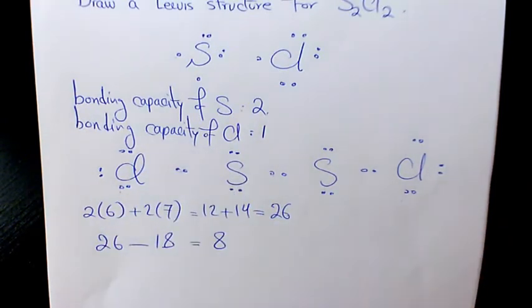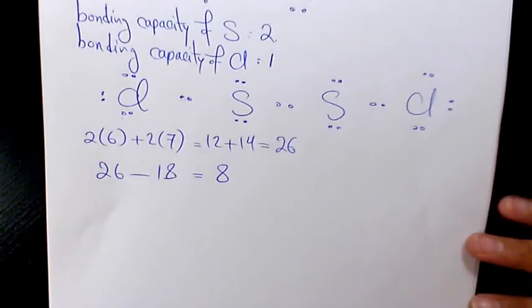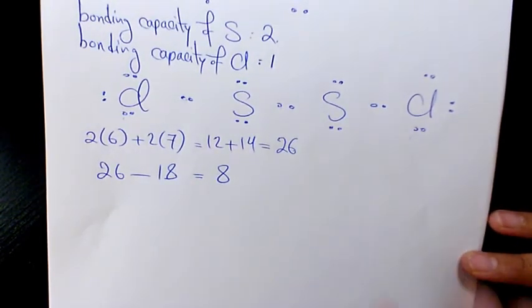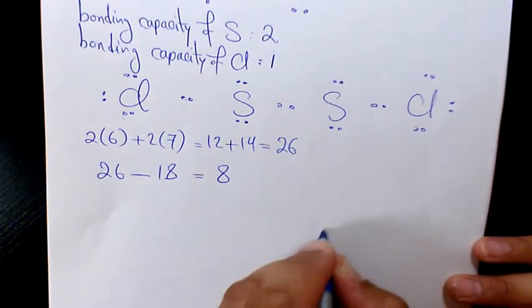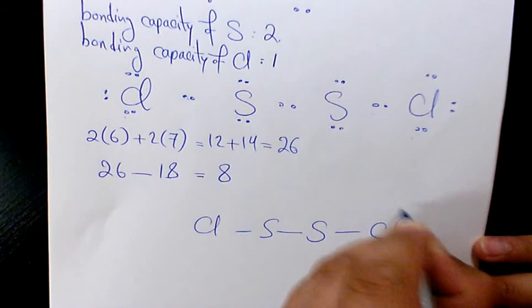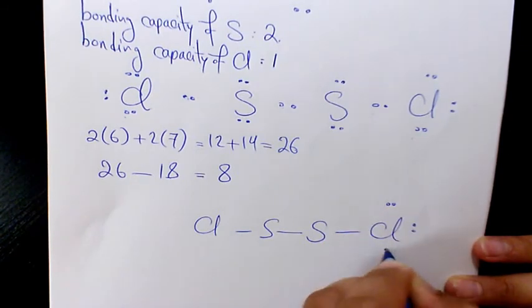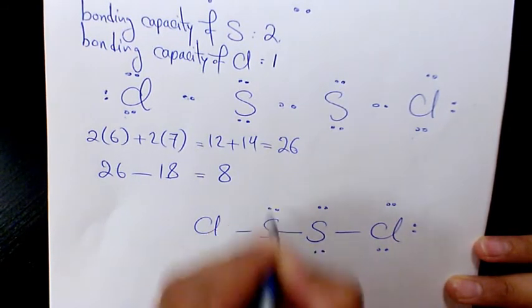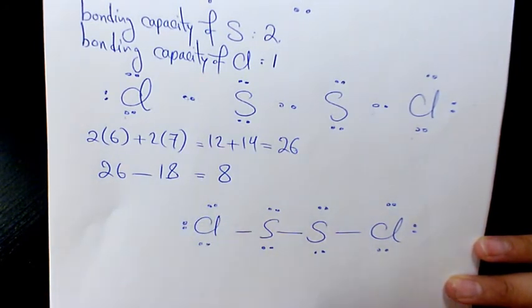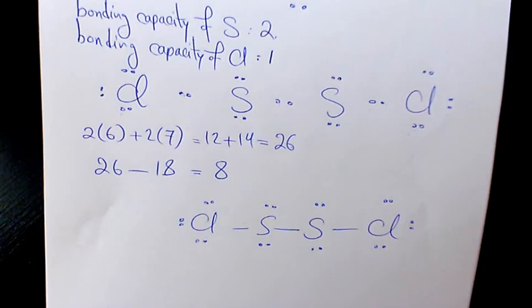What we need to do now is replace shared electrons with dashes. So it's going to be Cl-S-S-Cl. That's the Lewis structure for S2Cl2.